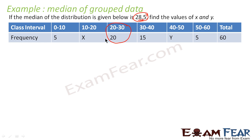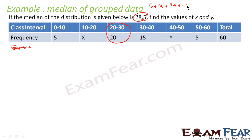The second thing we can easily say is that if you add all the frequency values — 5 plus x plus 20 plus 15 plus y plus 5 — the total is 60. So if you solve this, the relation I get is x plus y is equal to 15. That is my first equation.